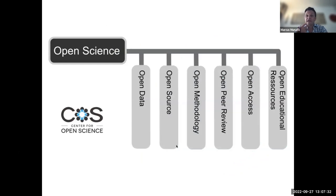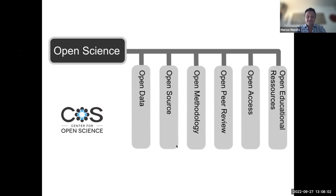Open research is really just the process of making as much of the research process available for scrutiny as possible — sharing not just the eventual output such as a journal article, a book, or a monograph, but also all of the intermediate research artefacts that contribute to that process. The term 'open science' is sometimes used, but I think 'open research' is more useful and inclusive. What we can make open includes data broadly defined, code, methodology, and we know about open access publishing and open peer review.